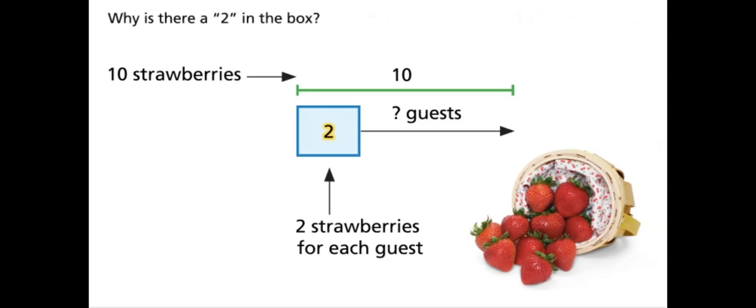Why is there a two in the box? It shows that each guest will get two strawberries. What does the arrow stand for? The arrow stands for the number of guests who will get two strawberries.